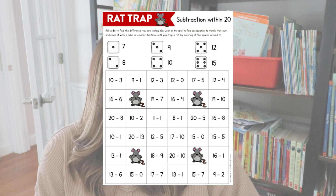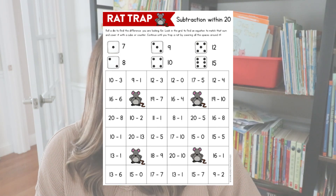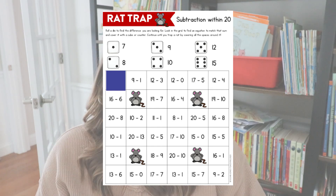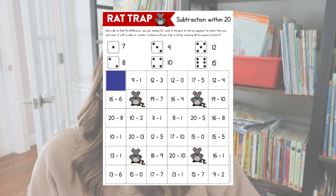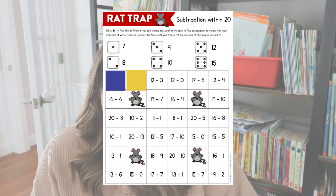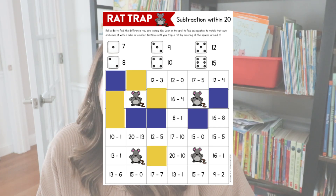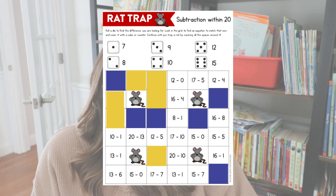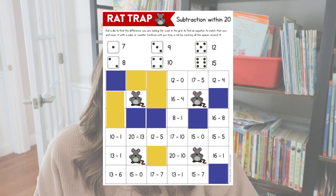Rat Trap is a bit more advanced because instead of looking at an equation and finding the difference, students are reversing that thinking — they roll the die to match the difference. I would use this later in my subtraction unit. Once students find an equation matching their difference, they cover it with a cube in their color. For example, rolling a one and looking for a difference of seven, they could cover the 10 minus 3 equation in the top left. Player two might roll a two, look for a difference of eight, and cover the nine minus one equation. Students keep rolling, finding the correct equation, and covering boxes until they trap a rat — building a full box around one of the rats on the board.